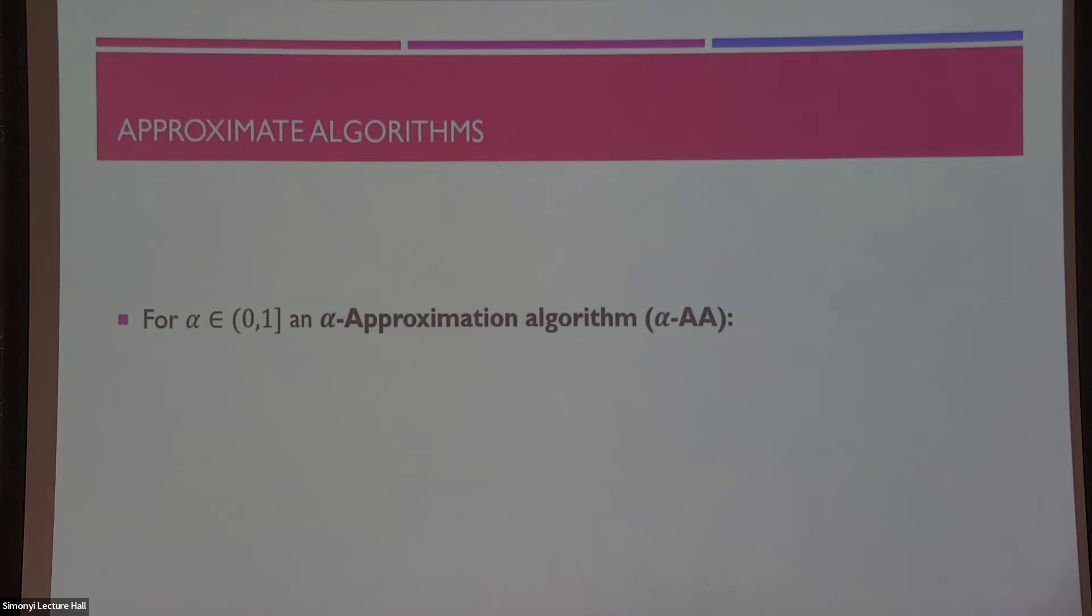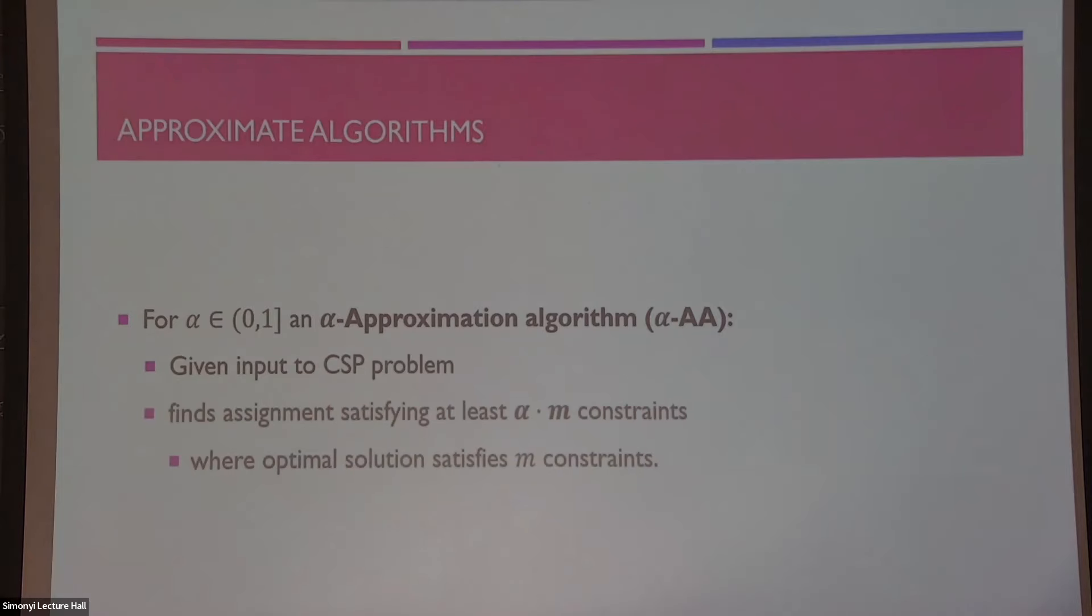So, an approximation algorithm or an alpha approximation algorithm for a certain CSP, it's just an algorithm that takes as input our favorite instance of a CSP problem, and it outputs an assignment that satisfies alpha times whatever the best assignment possible could have satisfied. So, I don't know. If the best assignment could have satisfied 100 constraints and alpha is 0.9, the algorithm should guarantee us an assignment that satisfies at least 90 constraints.